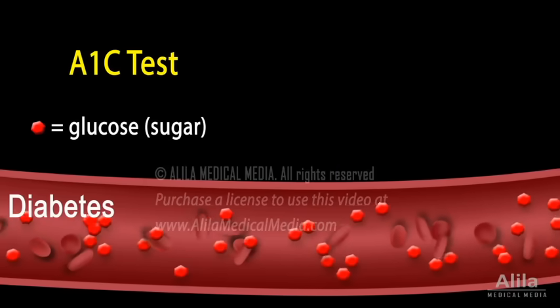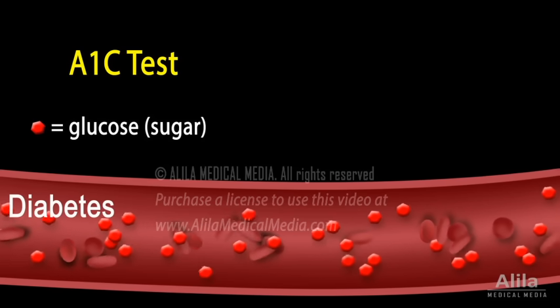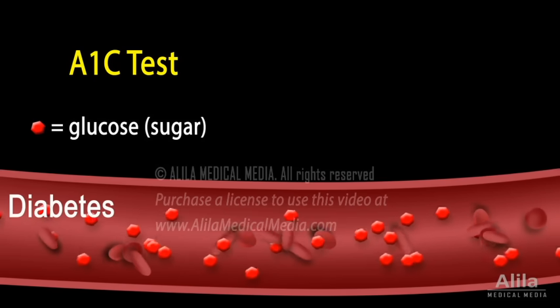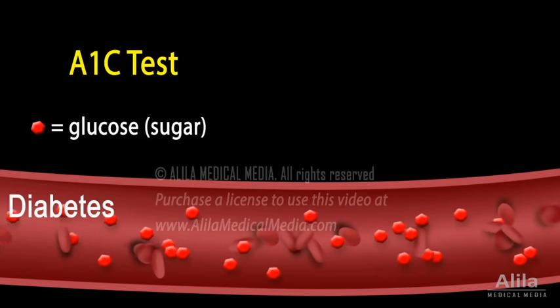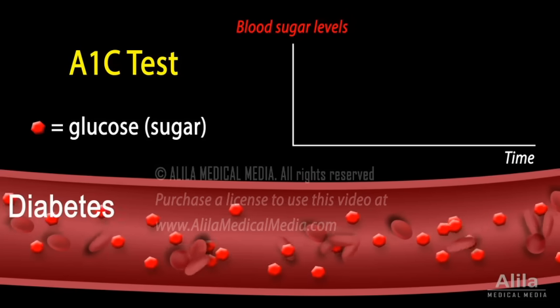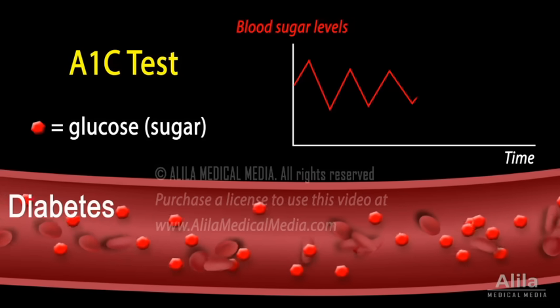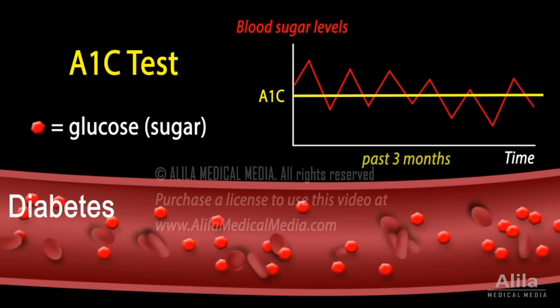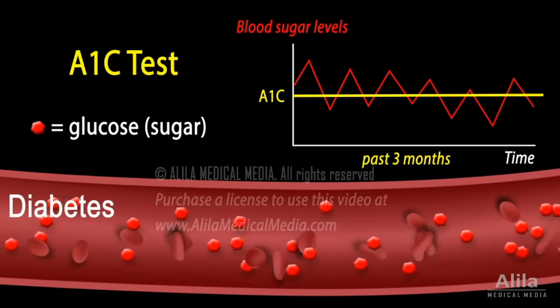The A1c test is a blood test used to diagnose diabetes and monitor the progress of a treatment plan. The test result reflects the average blood sugar levels in the past 3 months.